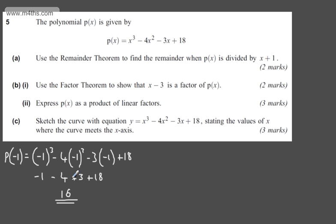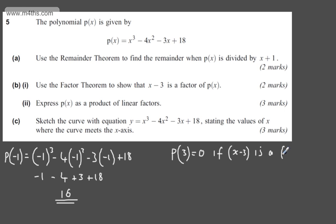In part B, the first part for two marks asks us to use the factor theorem to show that x - 3 is a factor of p. What we can state is that p(3) will be equal to 0 if x - 3 is a factor. So if x - 3 is a factor, then p(3) will be equal to 0. So let's go ahead and find p(3).